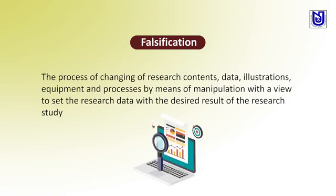Another form is falsification. It is a misconduct process of changing research contents, data, illustrations, equipment, and processes by means of manipulation in order to reach a desired result. Some researchers fix a primary result in their mind, and to reach that point they manipulate everything — data, equipment, reagents, techniques, and processes — to arrive at a target or a priori result. This is falsification.